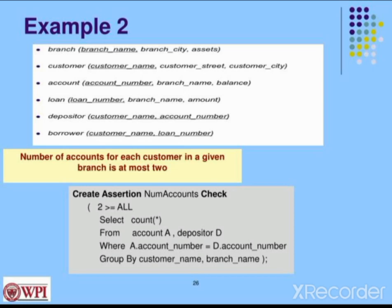So we select COUNT(*) per customer and compare with all customers. We compare using 2 because 2 is equal to or less than the maximum. That means at most 2 accounts — 2 is equal to or 2 is less. The predicate returns true or false.